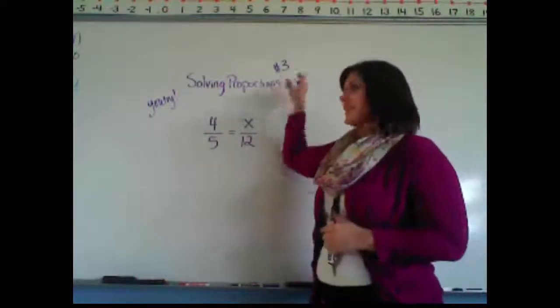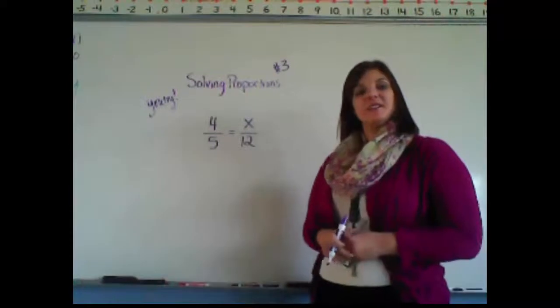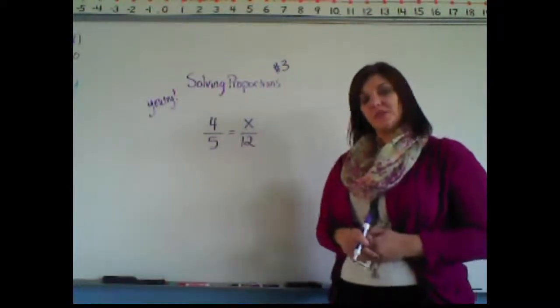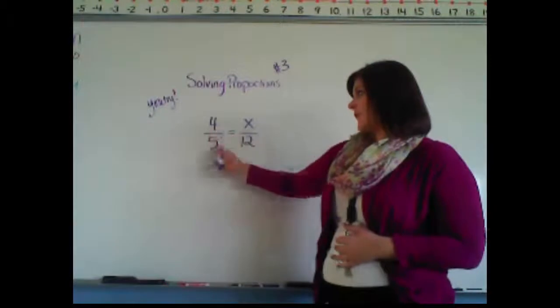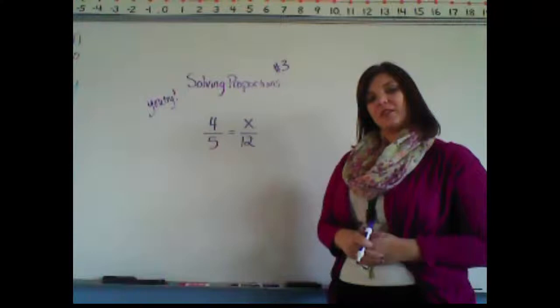All right, last you try. So we just learned method 3 for solving proportions. Why don't you guys go ahead and check this proportion out and see if you can use that third method of solving proportions. Our proportion is 4 fifths equals x over 12. Go ahead and pause and try it on your own.